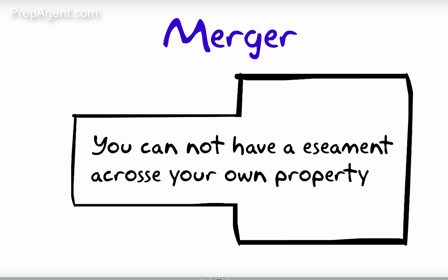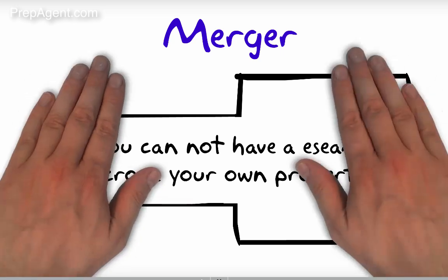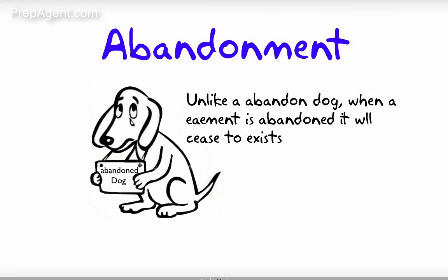There's also abandonment. Simply said, you stop using it — for one reason or another, you stop going to the property. When you abandon an easement, it will cease to exist.